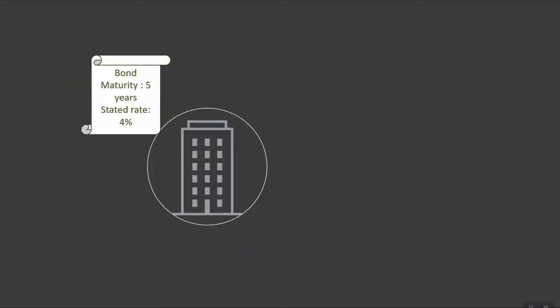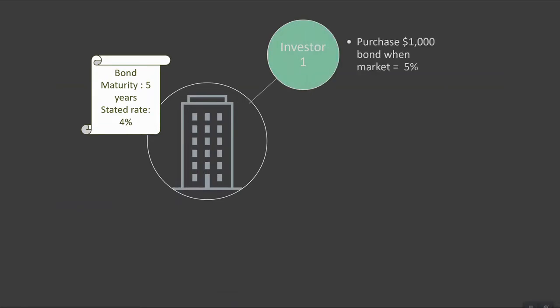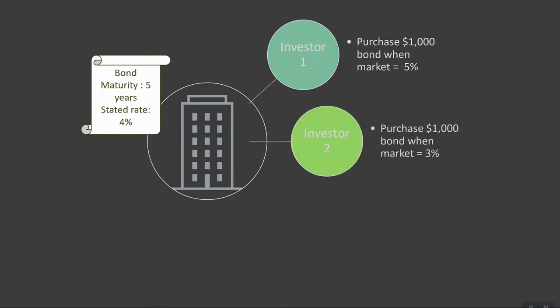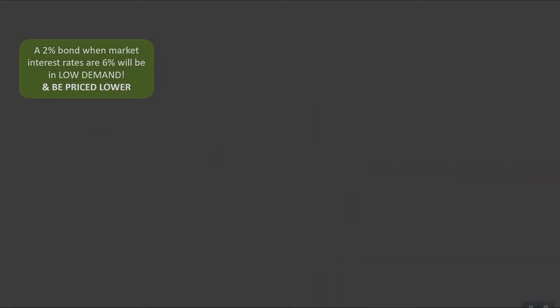Bonds are different from typical loans because they are essentially traded in the market. Market drivers determine what an appropriate interest rate is. Unfortunately, the interest rate determined for bonds is set in stone when the initial bonds are documented and sold on paper. As a result, the market rate of interest may be different from the rate stated on the bond itself, based on when the investor buys that bond. The difference between what the market believes is appropriate interest versus the stated amount causes the actual price of the bond to change.